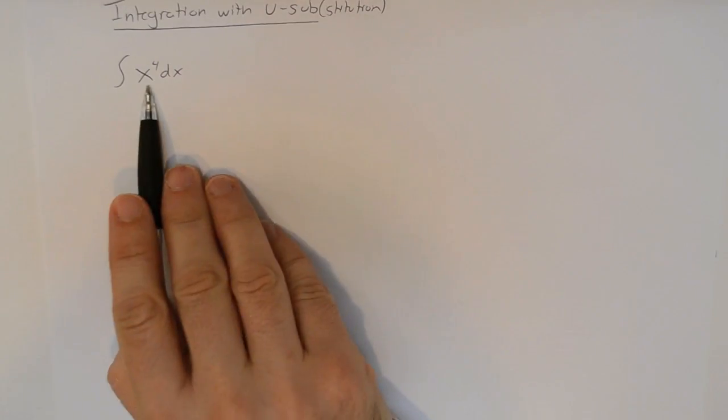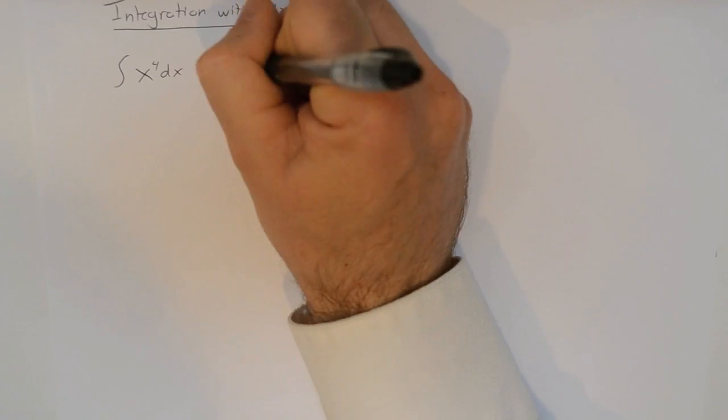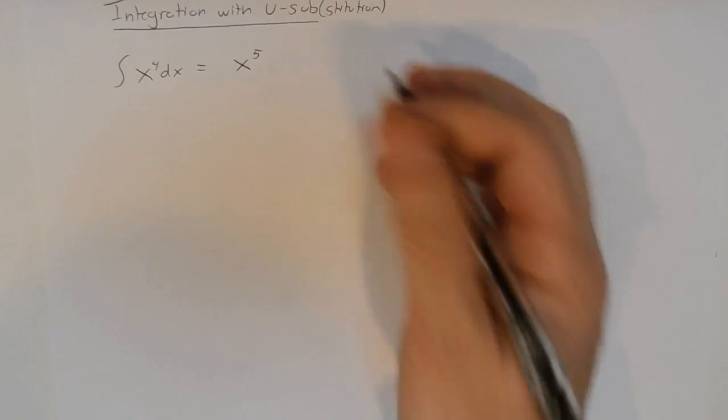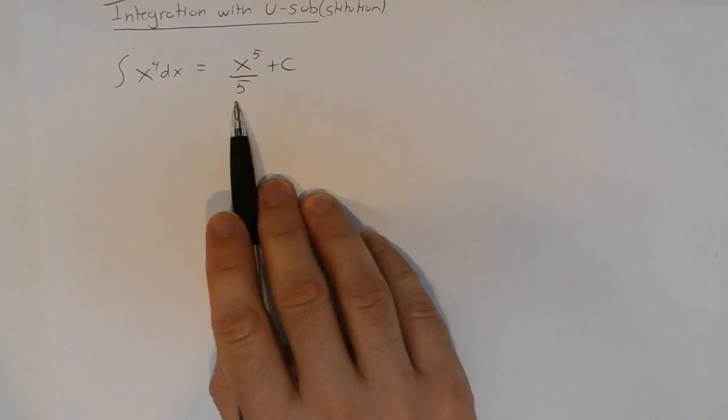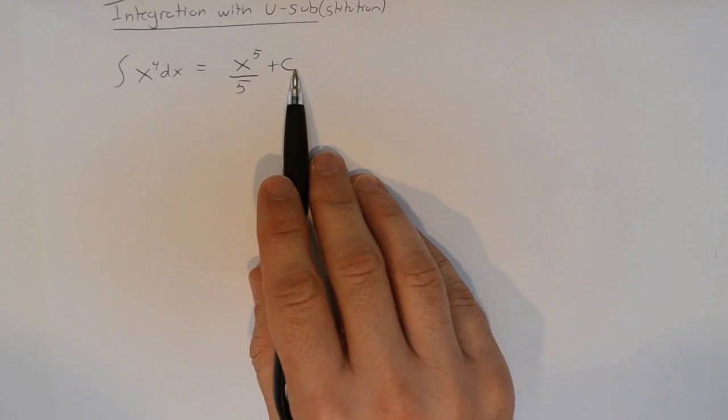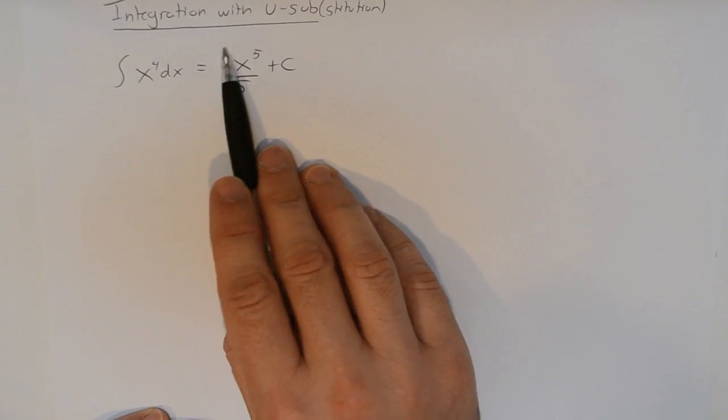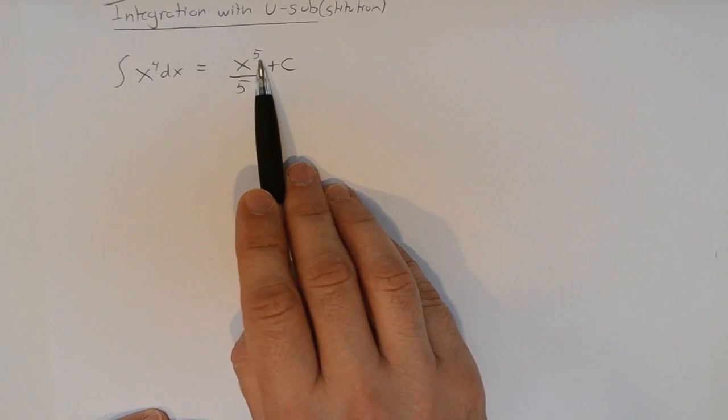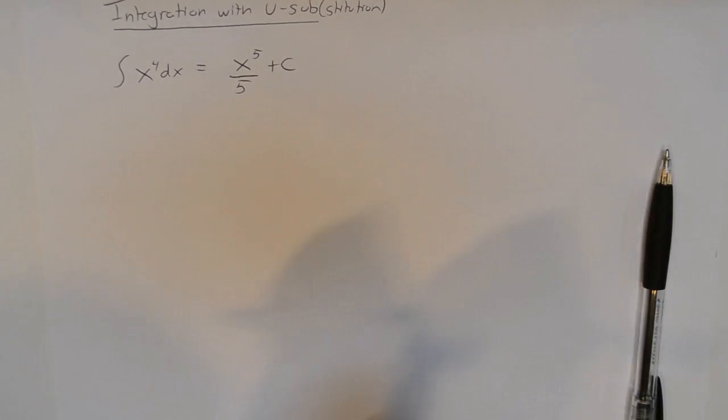I know that if I have the integral of just a variable to a power, then that integral is going to evaluate to the variable to the one higher power, in this case one higher would be 5, divided by 5. And then, of course, we're going to add that constant of integration in. We can check visually that if we take the derivative of this, the 5 will come down, so they'll divide out. We'll have x to the fourth power plus 0, which is exactly what we started with there.